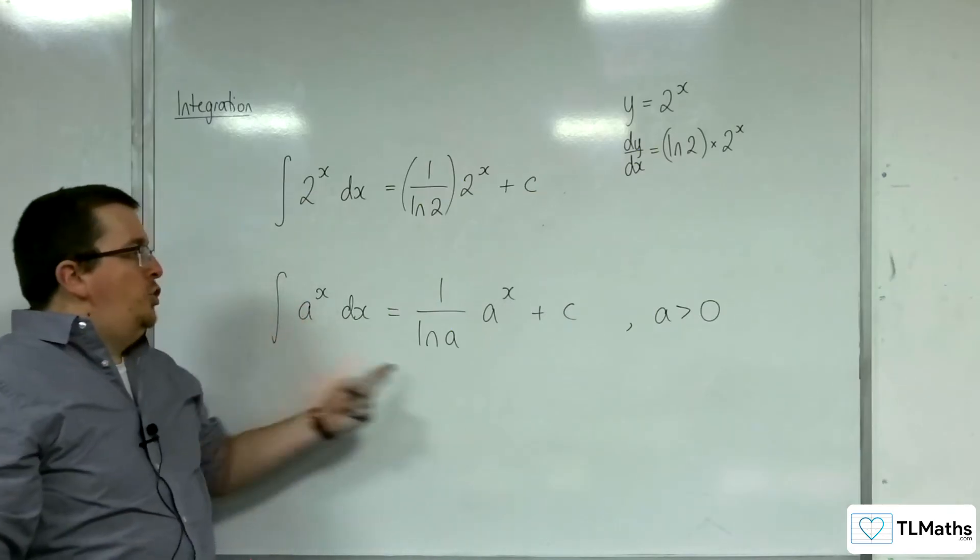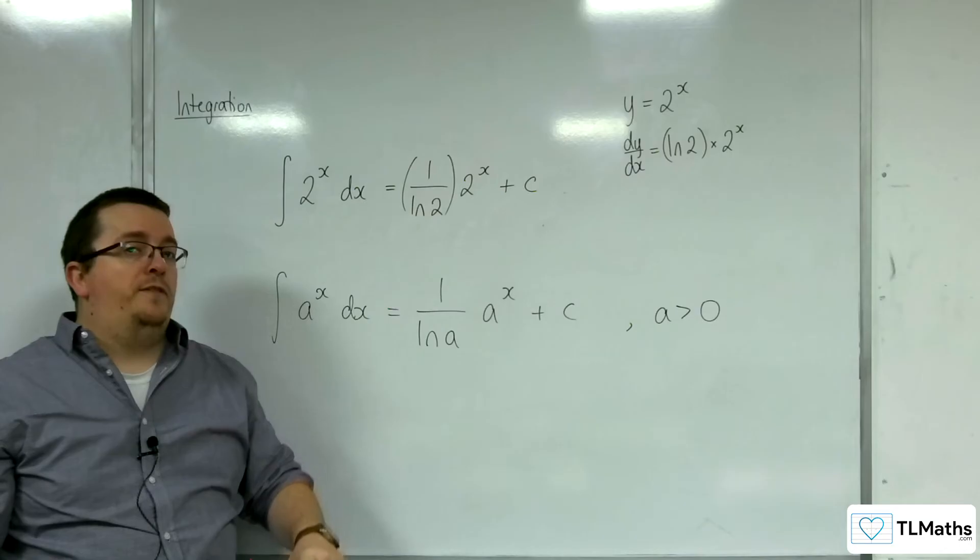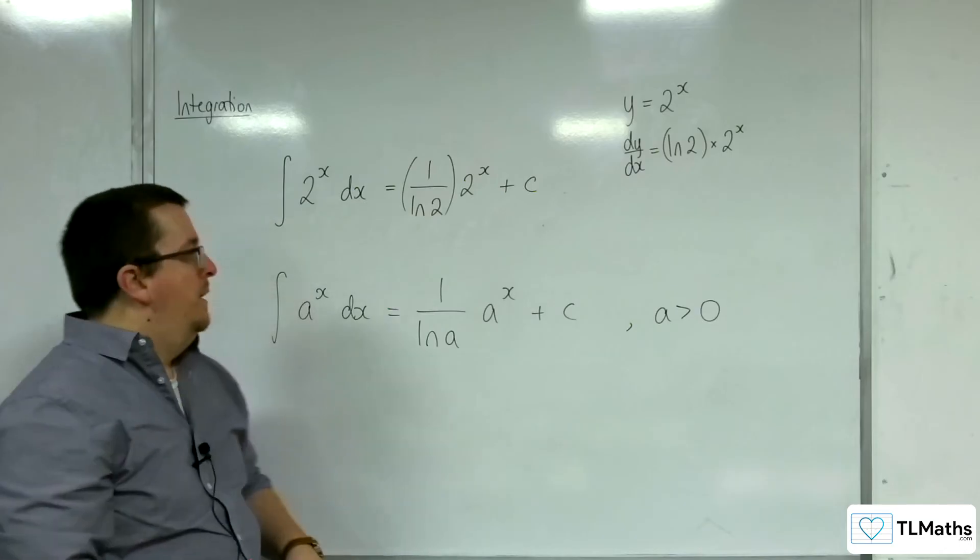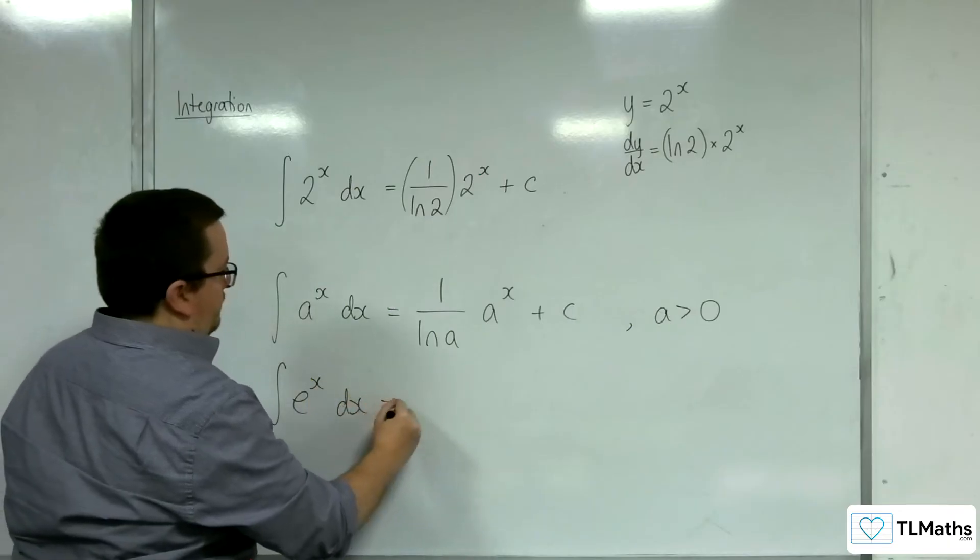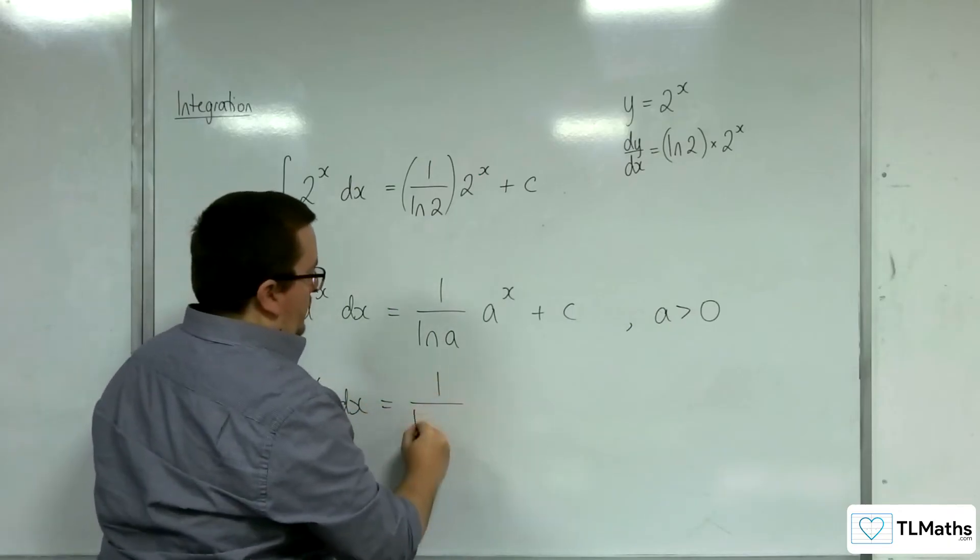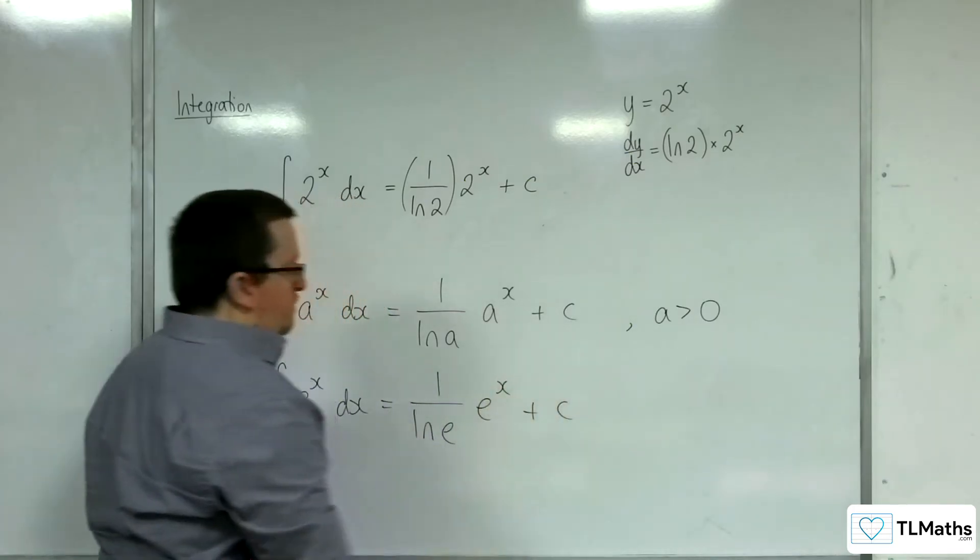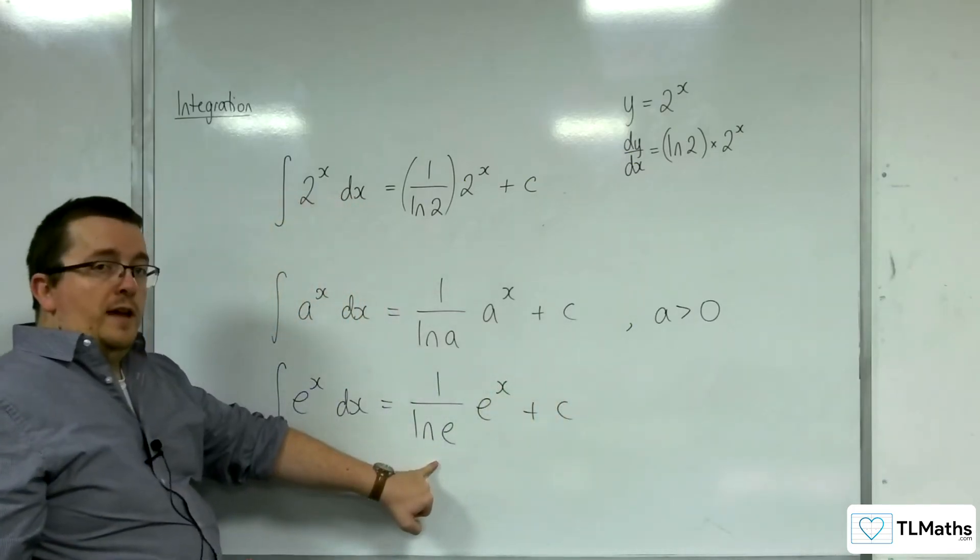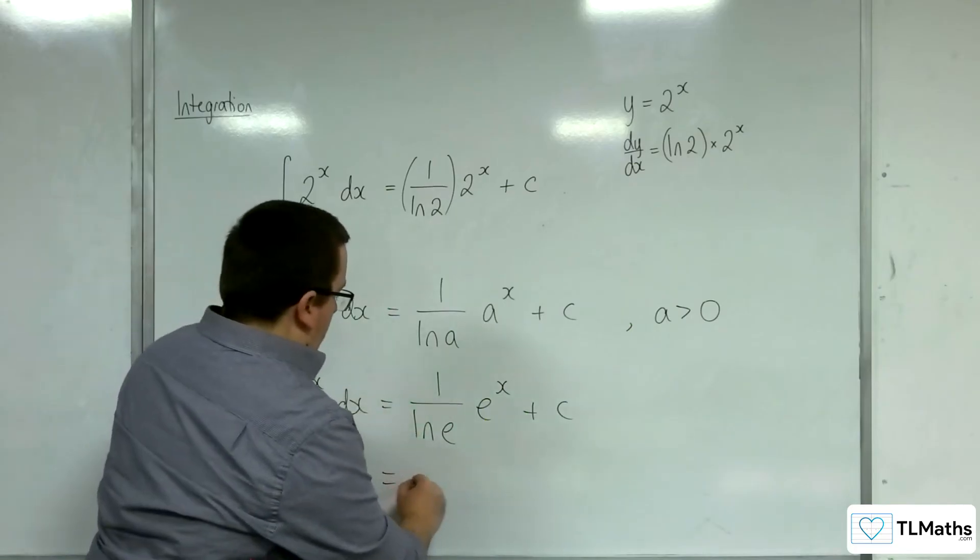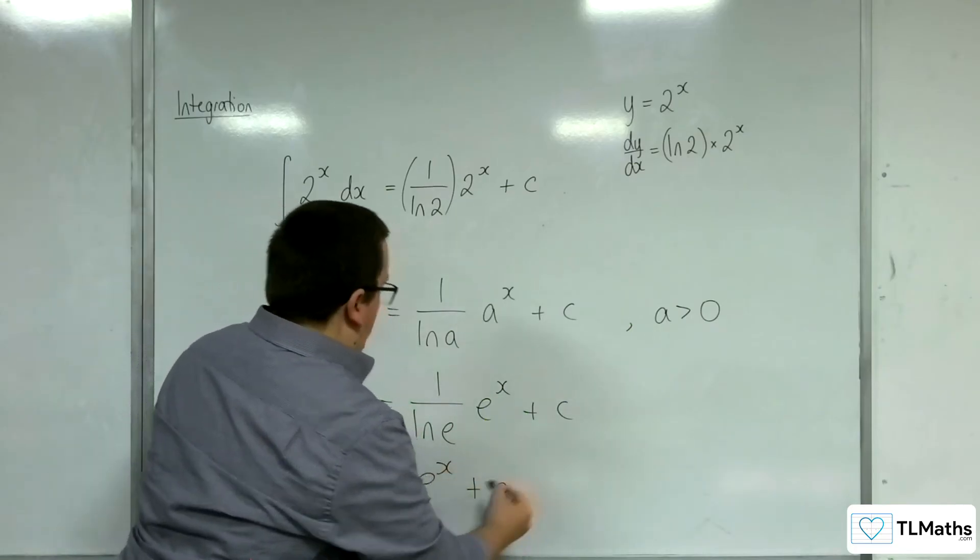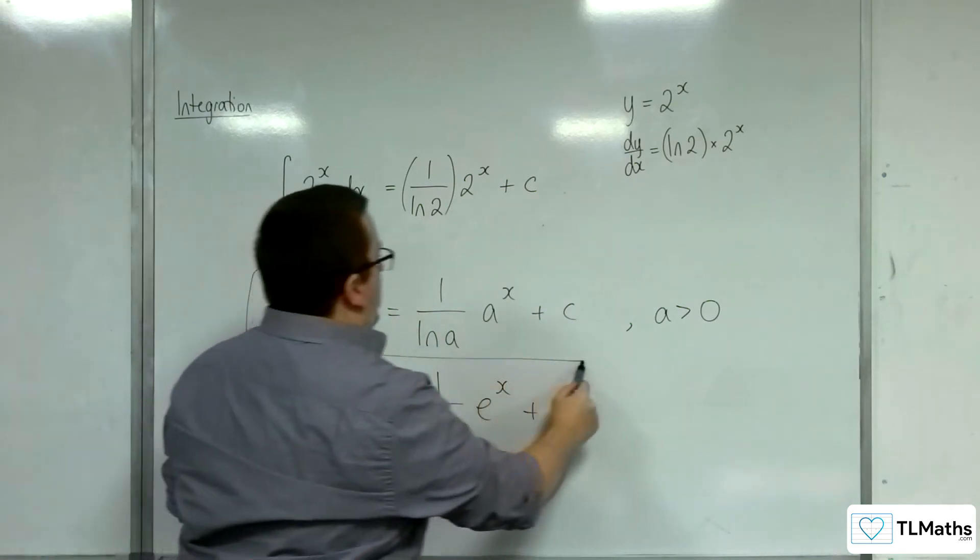Now, this should, if I substitute a for e, work perfectly well for that as well. Okay, so if I have e to the x dx, I would get 1 over log of e times e to the x plus c. And of course, 1 over log e is 1 over 1, so we just get e to the x plus c. So our rule that we have here works perfectly well for e to the x.